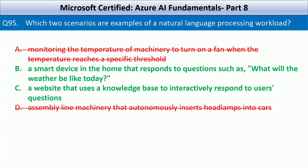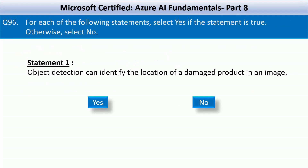Question number 96. Again, we have a series of statements and we need to tell whether each statement is right or wrong. The first statement is: object detection can identify the location of a damaged product in an image. Object detection is a core capability of Azure AI vision that identifies objects in an image, determines their location with bounding boxes, and can be trained to recognize specific object types including anomalies like damaged products, making this a correct statement.